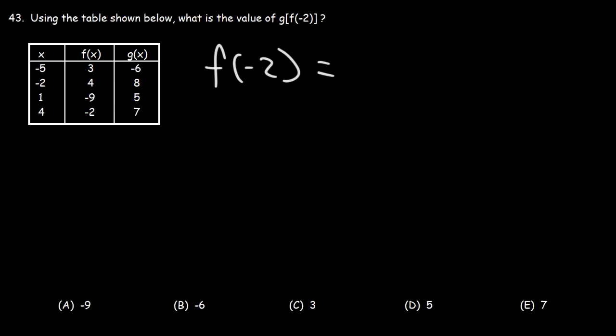So using the table, we need to use the second column, which deals with f(x). And we need to highlight the row where x is negative 2. So we can see that f(negative 2) is going to be this value, 4. So g(f(negative 2)) is equivalent to g(4). Since f(negative 2) is equal to 4.